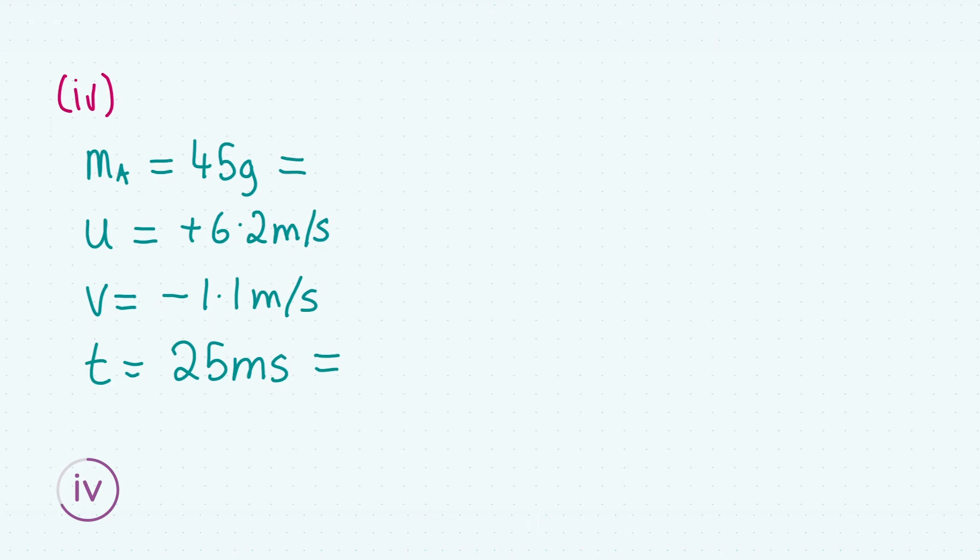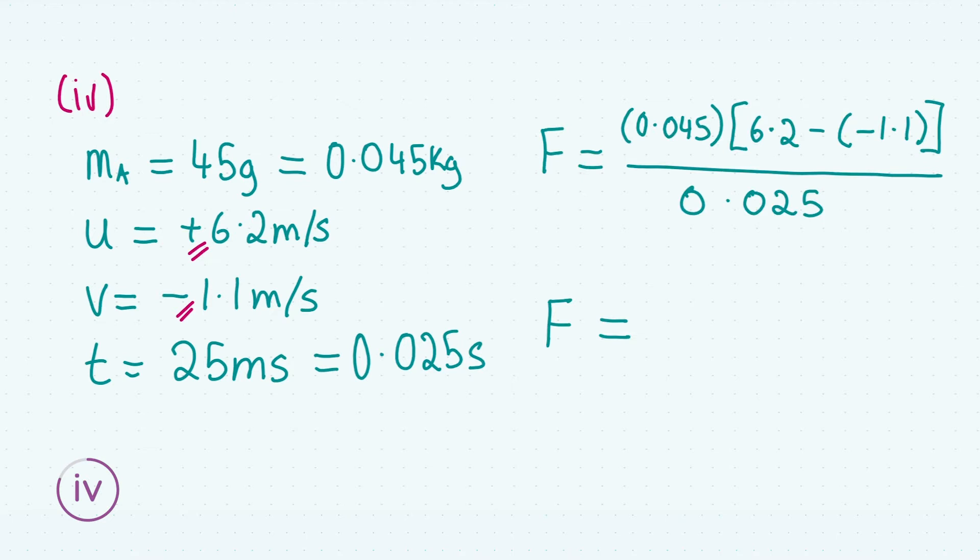We have all of our variables. We're going to have to change the mass into SI units because it's in grams and we need it in kilograms. Dividing by a thousand, we get the mass of A is 0.045 kilograms. The time interval of the collision is not in SI units—it's in milliseconds and we would like it in seconds. Again dividing through by a thousand, we get the time interval is 0.025 seconds. Notice when I wrote down the velocities I included the signs, so there's no ambiguity when we substitute all these values into the formula.